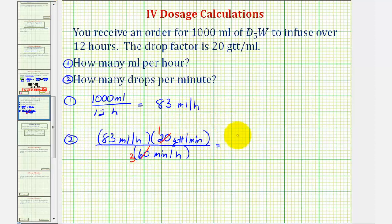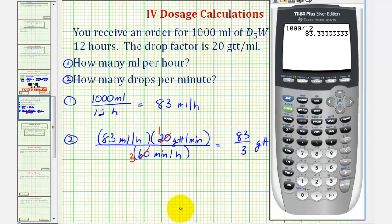Let's first do this on the calculator, and then we'll do it by hand. So 83 divided by three. Rounding to the nearest drop, notice how we have a six in the tenths place value, which means we'll round up. This will round to 28 drops per minute.